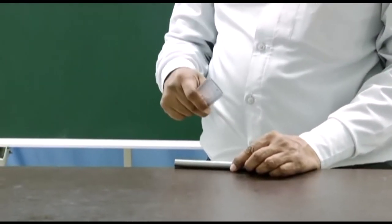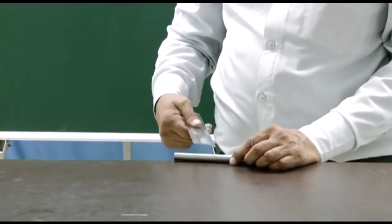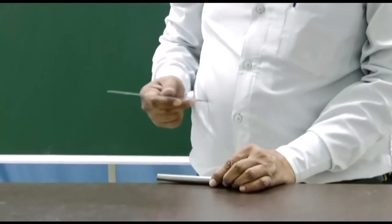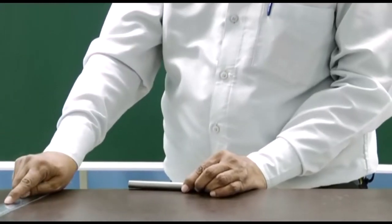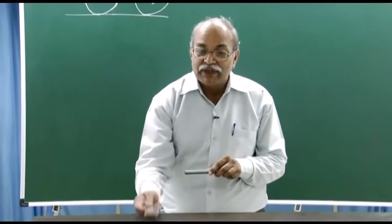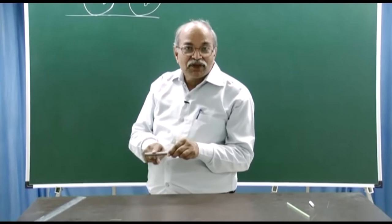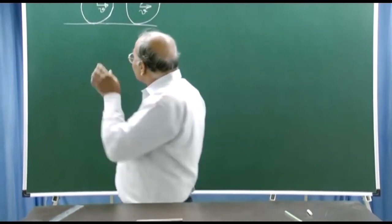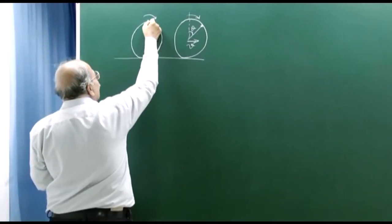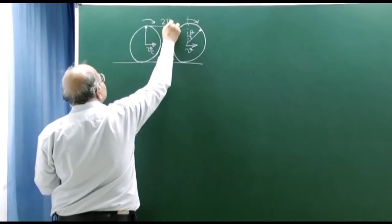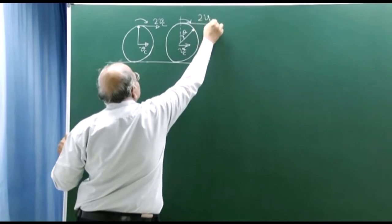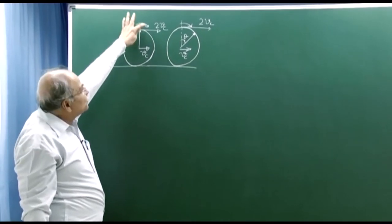At any instant, the velocity of the scale equals the velocity of the top surface since there was no slipping. So the velocity of the top surface must be double the velocity of the axis. The scale's velocity is 2 times the center's velocity, and the scale velocity equals the velocity of the top surface. So if the center moves with velocity Vc, then the topmost point moves with velocity 2Vc.